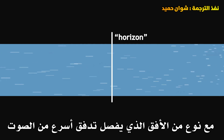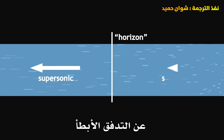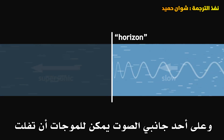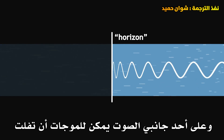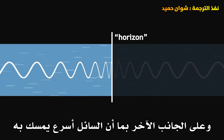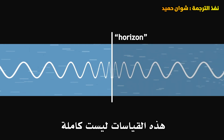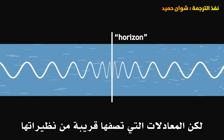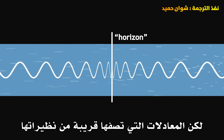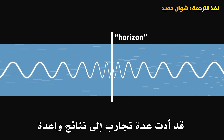Experimentally, we are already studying the phenomenon using analogies. In particular, we can create a flow of fluid in the lab that mimics the conditions of a black hole, with a sort of horizon that separates a supersonic flow from a slower flow. On one side, sound waves can escape, and on the other side, since the fluid is faster, they are captured. These analogies are not perfect, but the equations that describe them are close to those of the true phenomenon, and several experiments have led to promising results.